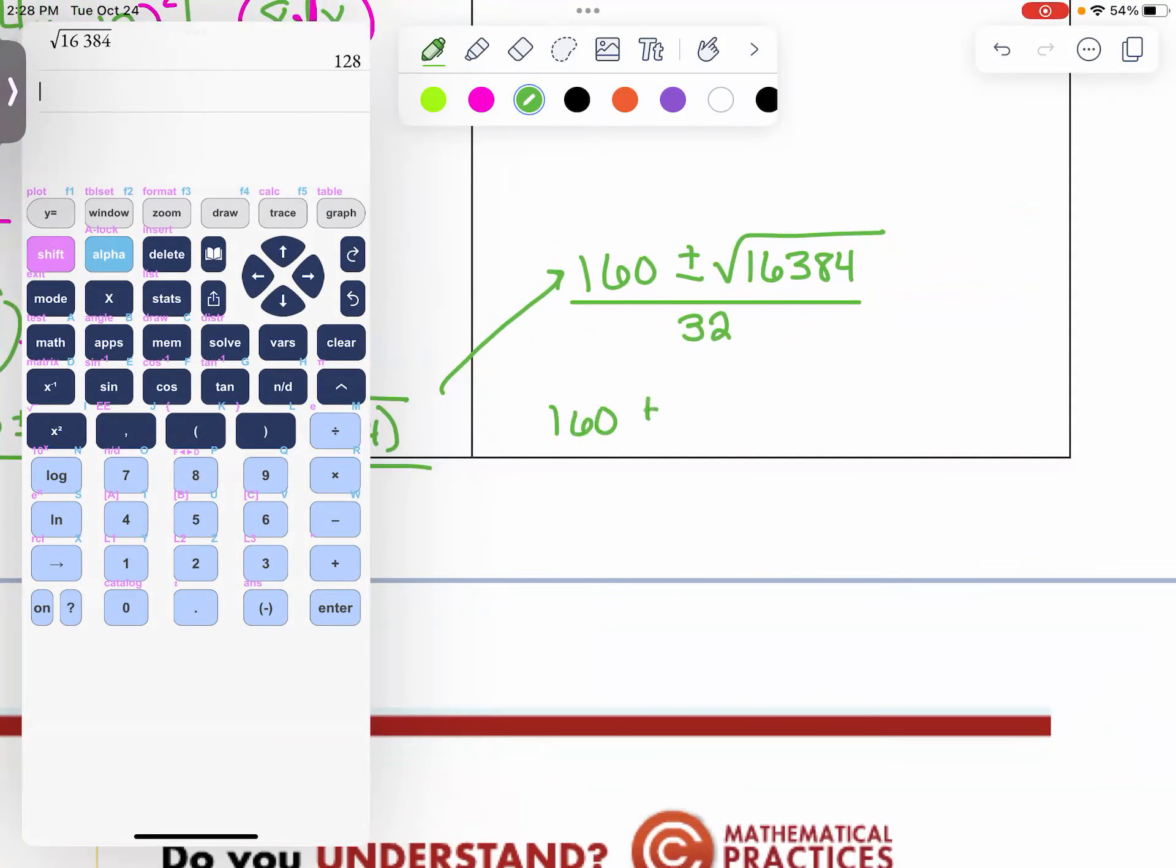It says 160 plus or minus 128 over 32. Are you ready? Can you add without a calculator? 288. Go ahead and use the calculator and divide that out. 288 divided by 32. So, our first answer is 9. Now, subtract. What's 160 take away 128? It's 32. 32 divided by 32? One.